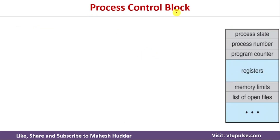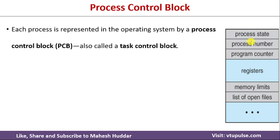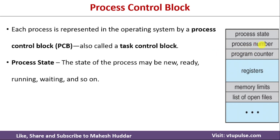That data structure is what is called the process control block. The process control block contains the process state, which is the state in which the process is currently in. The second component is the process number — each and every process is given a unique number. The third component is the program counter, which contains the instruction to be executed next whenever we move a process from running state to waiting state. This lets us continue from where we left off in the previous state.